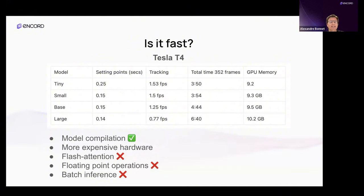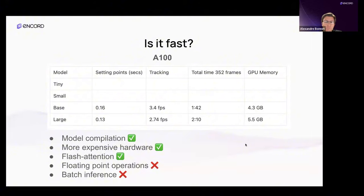Other settings include compiling the model, running on more expensive hardware, and SAM2-specific options like batch mode, flash attention, and floating point optimizations. Benchmarked on a Tesla T4, better hardware immediately gives a performance boost, as do advanced optimizations not available on lower-performance hardware. Note that without those optimizations enabled, we're not approaching real-time in this particular benchmark.